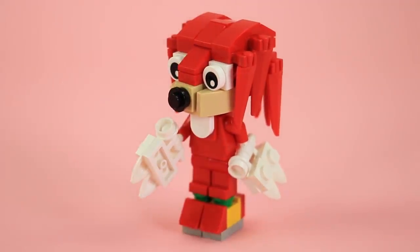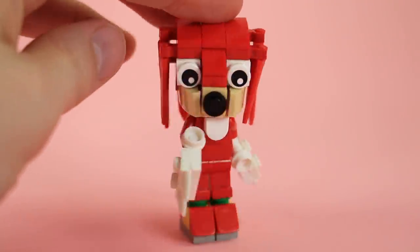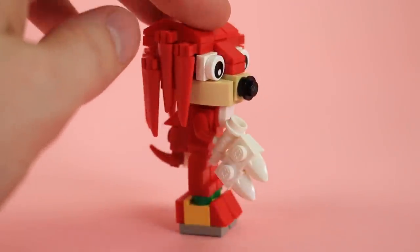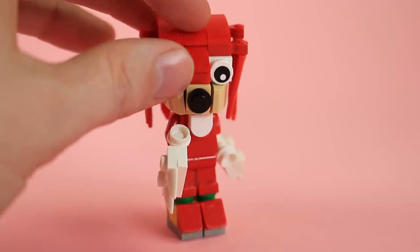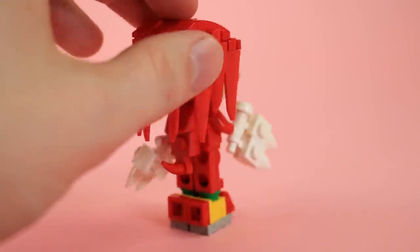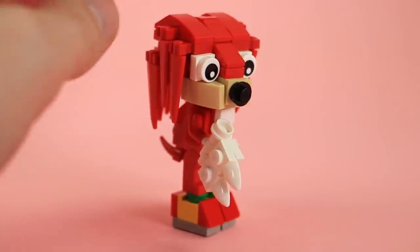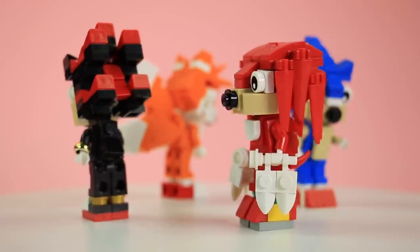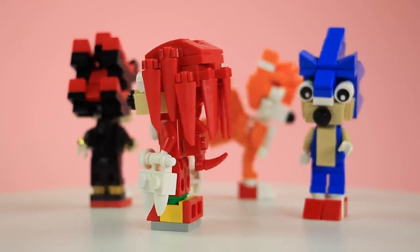So yeah there you have it. Knuckles from Sonic the Hedgehog. I think his overall shaping and coloring looks great. He's definitely ready to go bust some walls or grab the master emeralds. Defend his island, Angel Island, his home. And he looks very much at home with my other Double Fig Sonic characters.